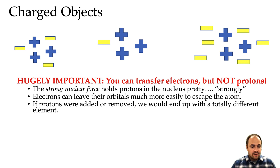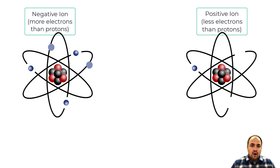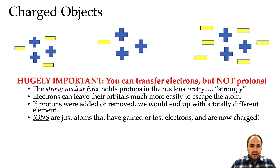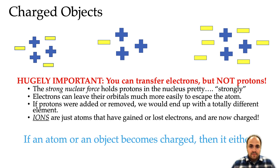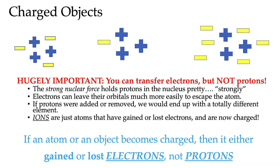Ions are atoms that have lost or gained electrons, so they have a charge. Typically atoms are neutral, meaning they have an equal amount of positive and negative charges, but when you add or remove electrons — the negative charge carriers — you have created an ion, which is basically just a charged-up atom. So remember: if an atom or object becomes charged, it either gained or lost an electron, not protons.